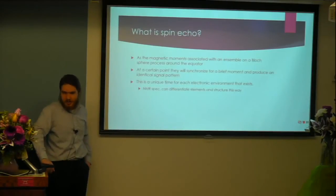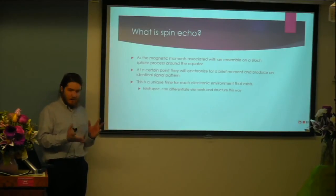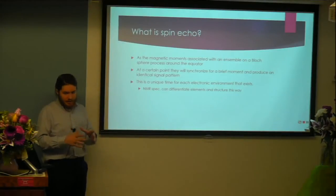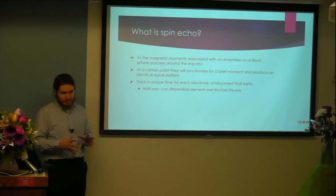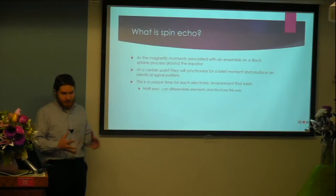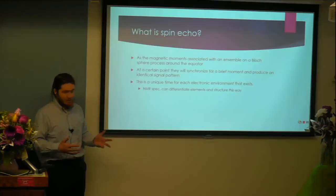So, what is a spin echo? As the magnetic moments of a group of electrons move around a Bloch sphere, around the equator, at one point in time they will synchronize and constructively combine their signals into one very large signal. The exact time this happens for an atom is unique to each atom and to each electronic environment, including how it's bonded, for every single state that there can be. This is the principle behind how NMR spectroscopy can differentiate elements and atomic structure.